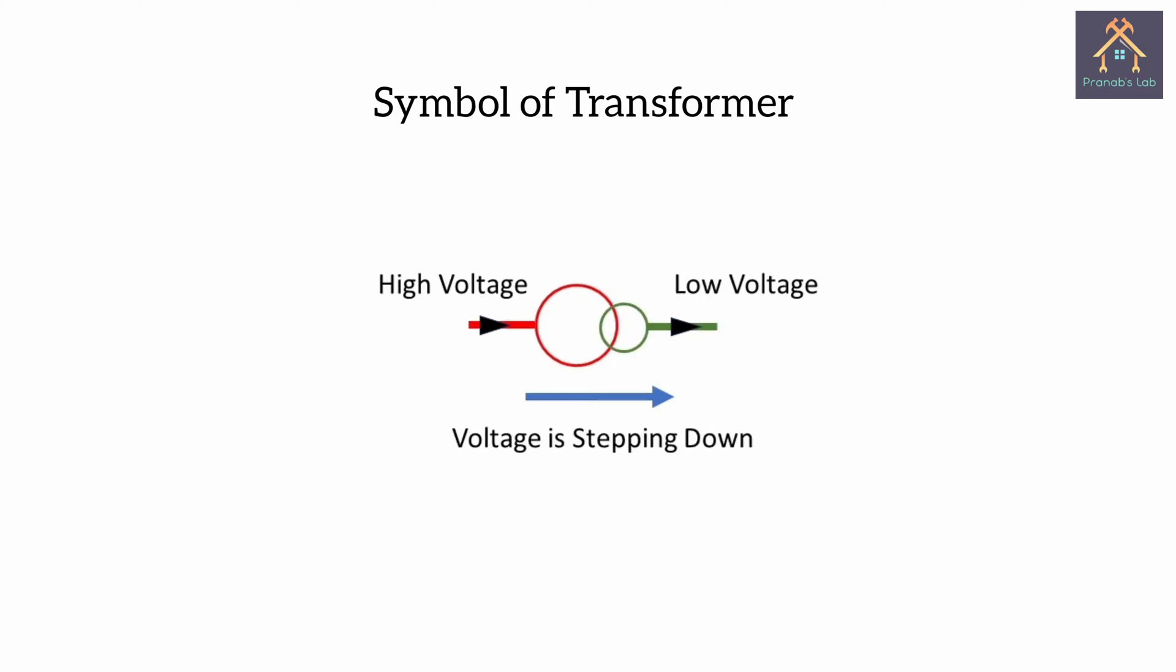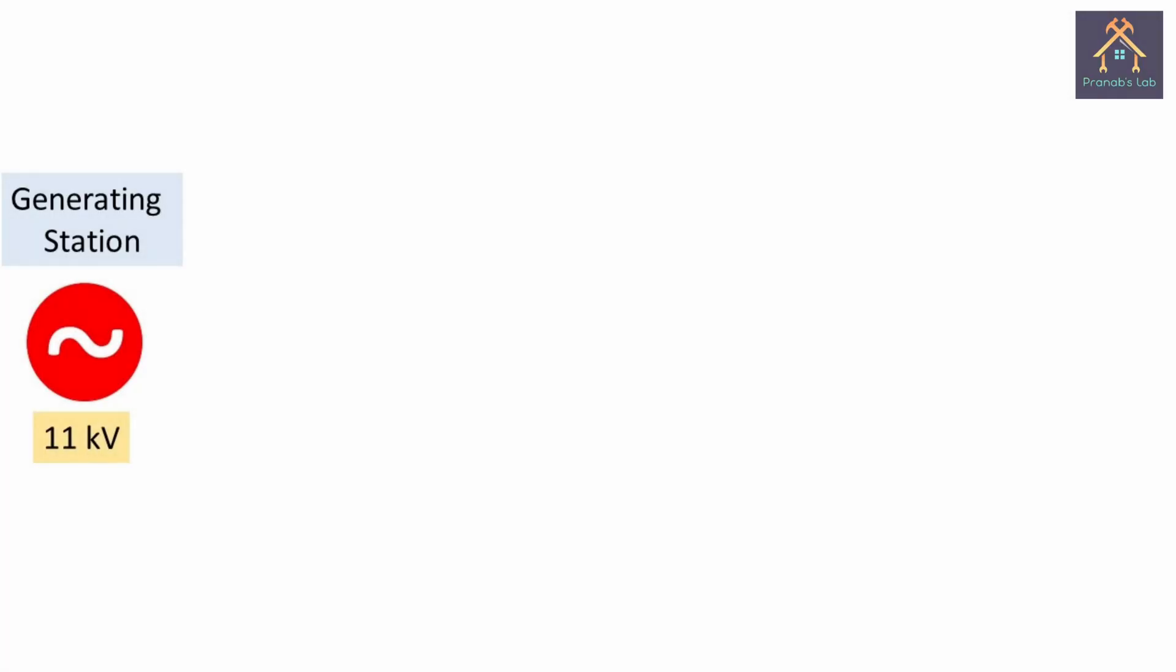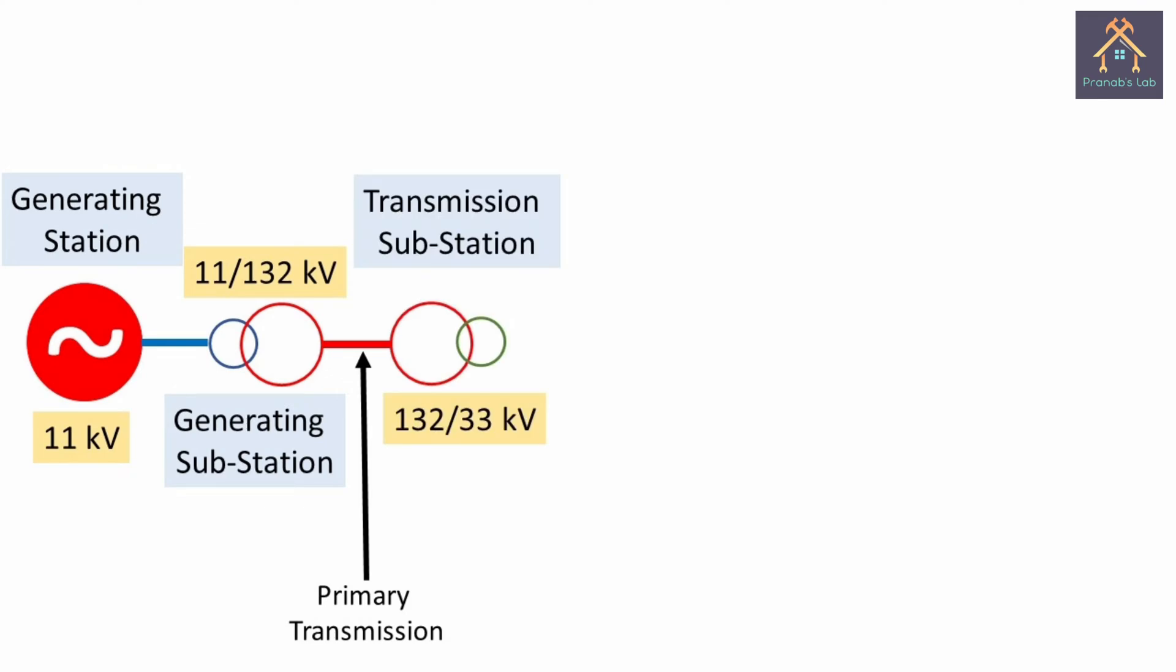First of all, the power is generated at generating station at 11 kV. Then it is fed to the generating substation and here the voltage is stepped up from 11 kV to 132 kV. Then it is transmitted to transmission substation and here the voltage is stepped down from 132 kV to 33 kV. The extra high voltage transmission from generating substation to transmission substation of 132 kV line is called the primary transmission.